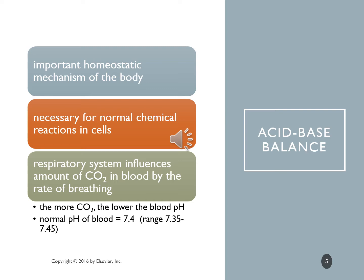The normal pH of blood is 7.4 to 7.45, and that is within a factor of 10. So if you have a capnograph, the expired CO2 is 35 to 45 — also by a factor of 10. If you remember that factor of 10 and the range 35 to 45, it's really close to the pH of blood; it's just that 7 is in front of that 35 to 45.